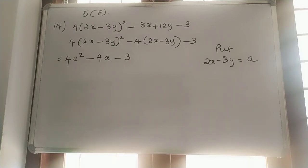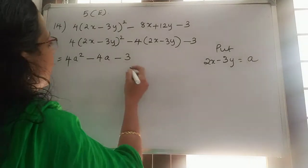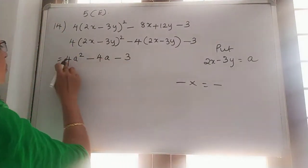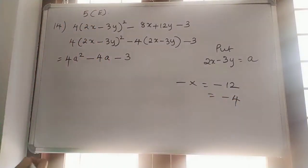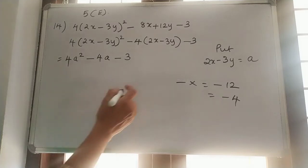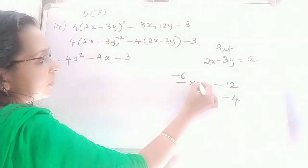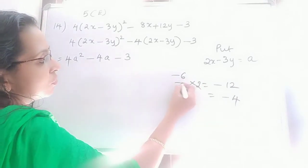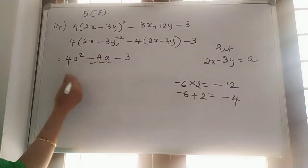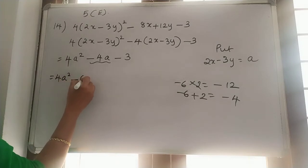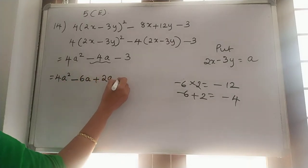So splitting the middle term — is it possible? Dash into dash: negative 3 into 4 is negative 12, and we need negative 4. So which are the two numbers? Negative 6 and positive 2 are possible. Negative 6 plus 2 is negative 4.